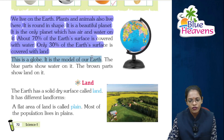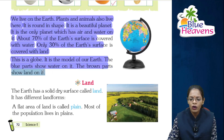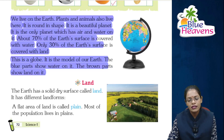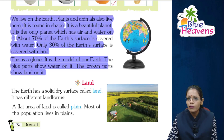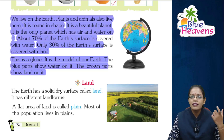This is a globe — it is the model of our Earth. The blue part shows water on it, and the brown part shows land on it. Look at the globe: the blue part is the water content and the brown part is the land content.